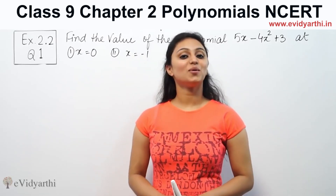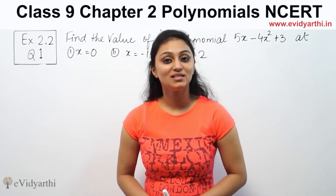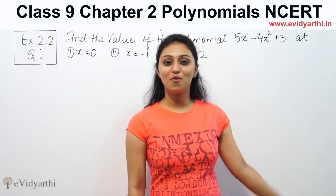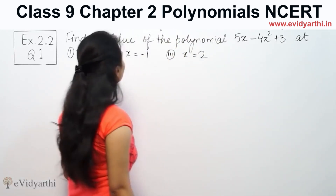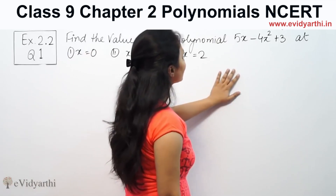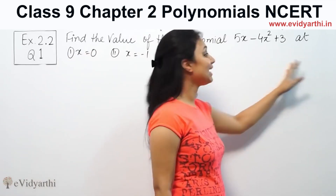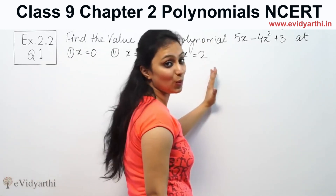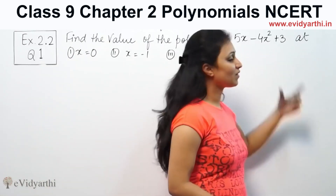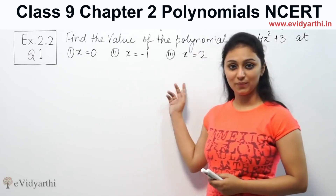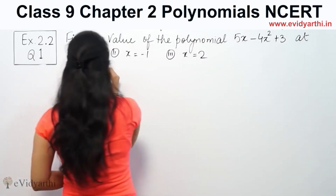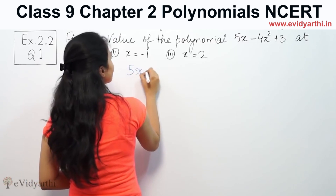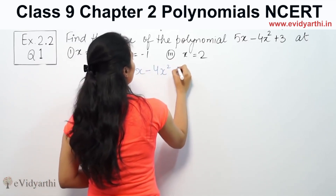Hi, this is Khushbu with another question on polynomials. This is question number 1 of exercise 2.2, page number 34 from NCERT. The question says: find the value of the polynomial 5x minus 4x squared plus 3 at x equals 0, x equals minus 1, and x equals 2.